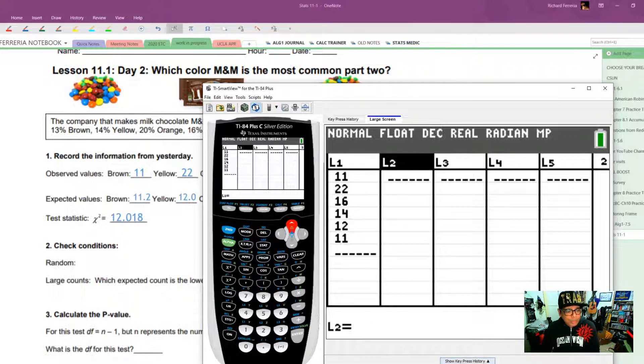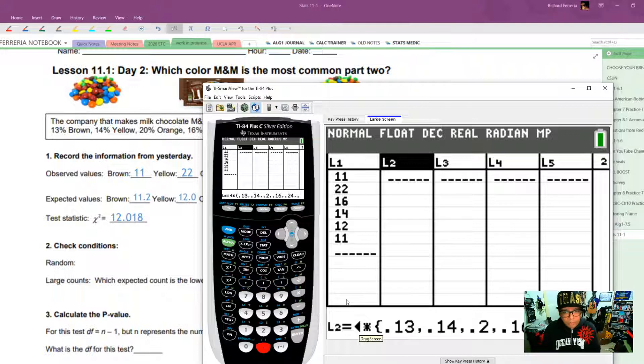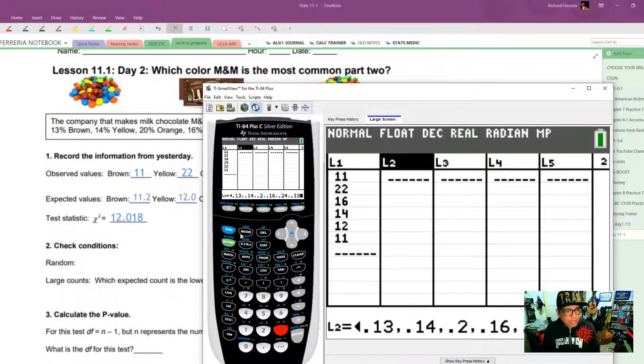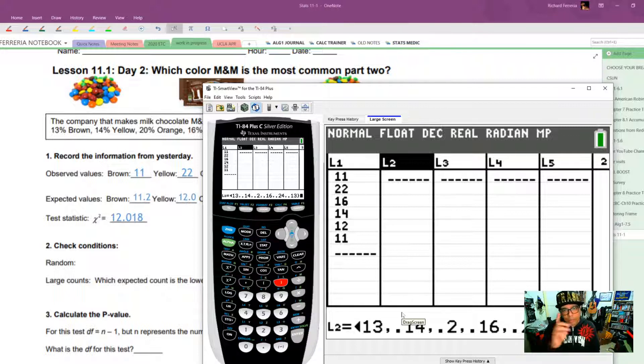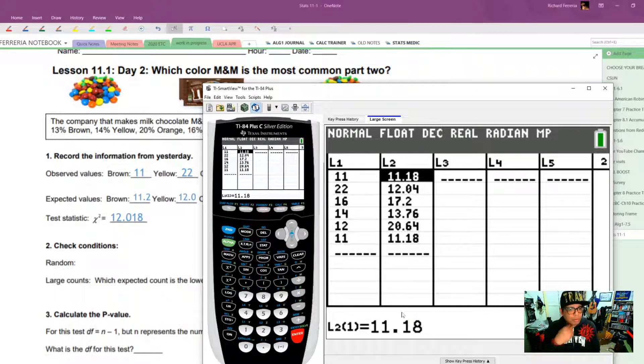Once you have your observed values in L1, you can go ahead and put your expected values in L2. Now a shortcut to this, if you want to call this a shortcut, is to go ahead and highlight list 2 and then type in 86, which is our total number of M&Ms here. And we're going to multiply by, and second parenthesis gives you these curly braces. And then now we're going to type in the distribution.